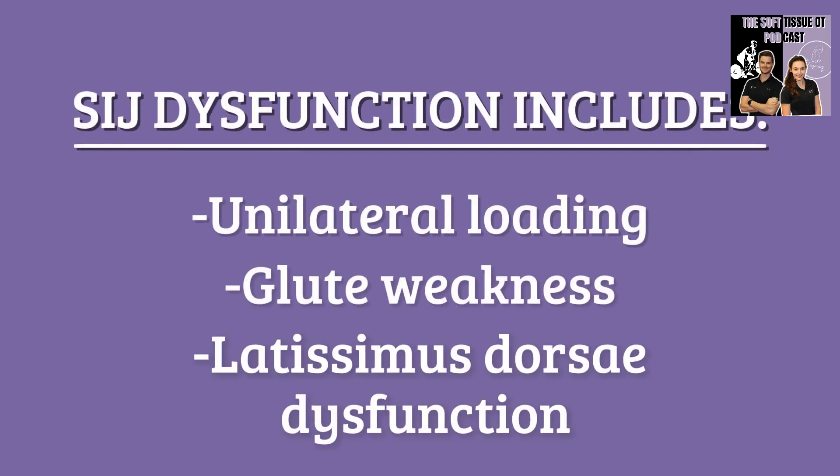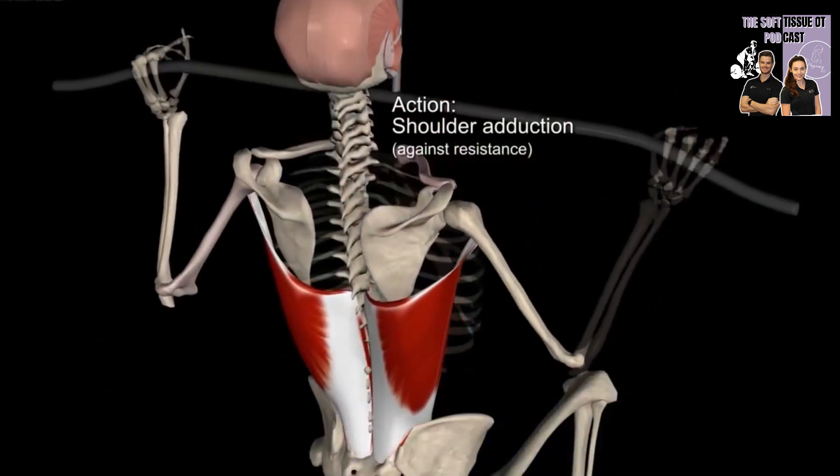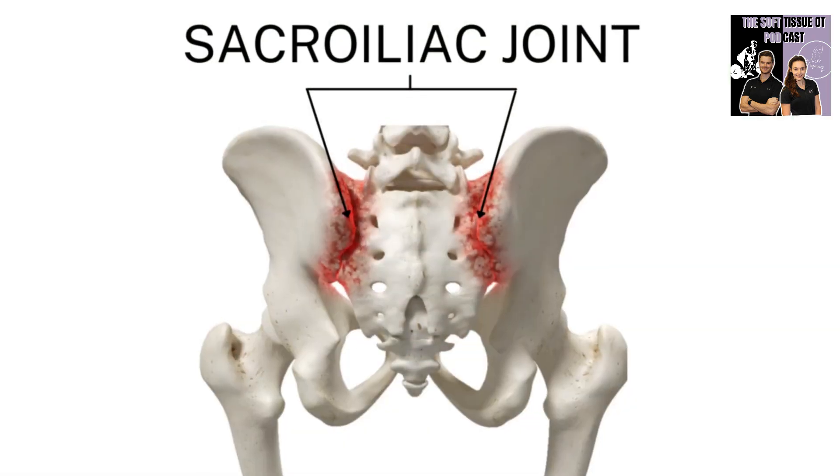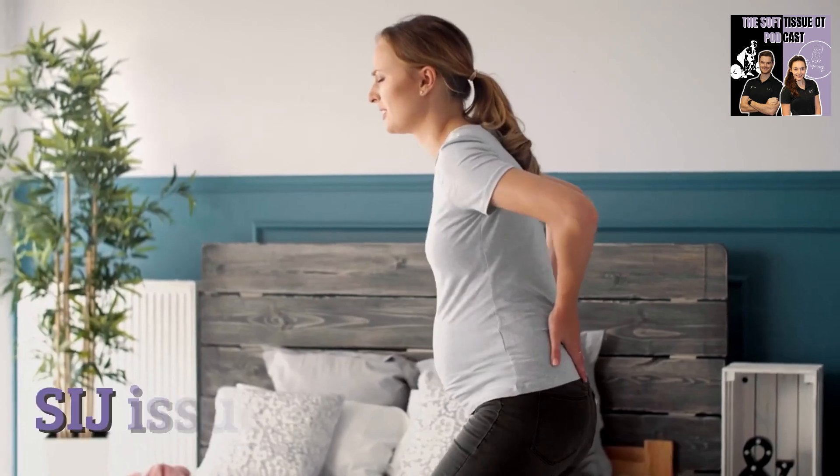Continuing on that vein, latissimus dorsi dysfunction is another contributor. The lats create a very important force coupling system with the glutes, helping to reinforce SIJ stability. Poor lat engagement or activation reduces the buttressing effect that those muscles provide to stabilize the joint. Finally, trauma and repetitive stress — falls, direct impacts, or repetitive motions, particularly unilateral ones — can overload and overstress the SIJ and eventually lead to disrupted mechanics.